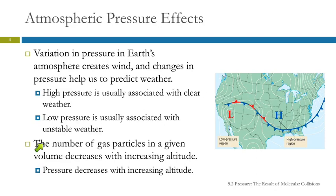The number of particles in a given volume decreases with increasing altitude. As you go higher and higher above sea level, the concentration of gas particles is less and less. So atmospheric pressure decreases with altitude. If you've ever been up to Grant Grove, it's about 6,000 to 7,000 feet above sea level, and the air is thinner up there.